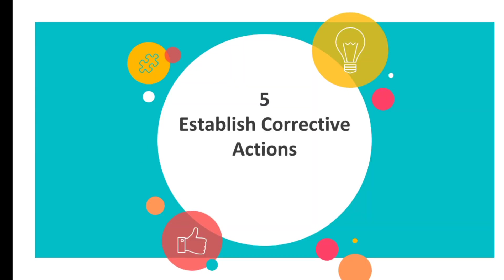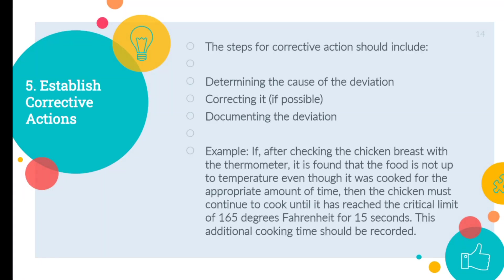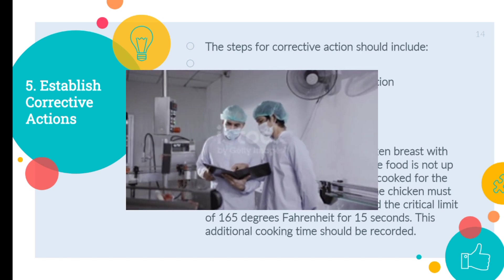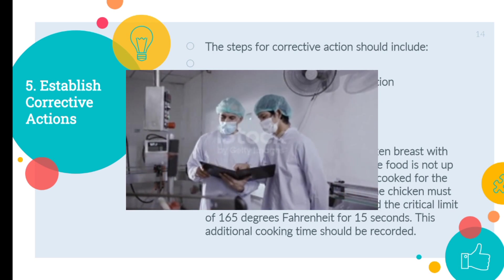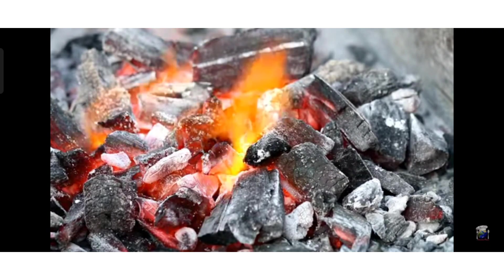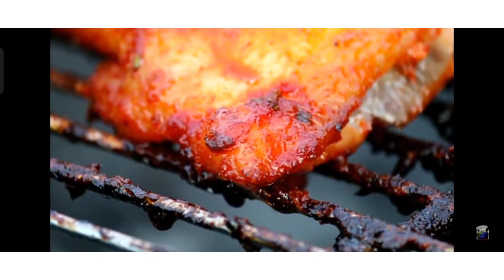The fifth principle is Establish Corrective Actions. If a critical limit is not met during the process, it is called a Deviation. When a deviation occurs, we need to have the tools and knowledge to take corrective actions and ensure the contaminated food never reaches the end consumer. The steps of corrective action should be: determine the cause of deviation, correct it if possible, and then document the deviation. For example, if after checking the chicken with a thermometer it is found that the food has not reached the required temperature, the chicken must continue to cook until it has reached the critical limit of 165 degrees, and this additional cooking should be recorded.